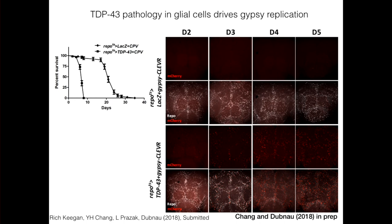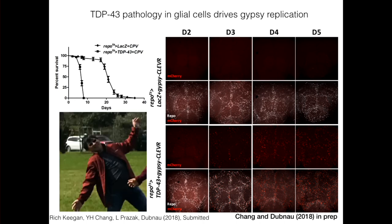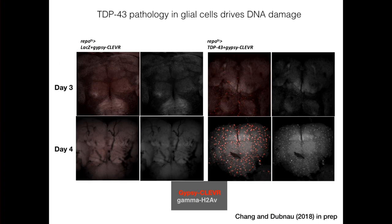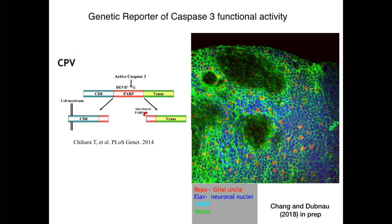When co-labeled with the glial marker REPO, which labels glial nuclei, you see something remarkable — the marker seems to be lost over the next several days. Gypsy is replicating — but is it actually causing DNA damage? Forever used the gamma-H2AV marker, a histone variant that marks DNA-damage foci. In control animals at day three or four, there's no evidence for H2AV labeling and no evidence for GYPSY CLEVER replication. But when TDP-43 is induced, there is a massive upregulation of GYPSY replication in glia and quite a lot of evidence for DNA damage. So GYPSY is replicating and it is correlated with DNA damage.